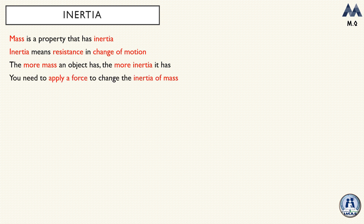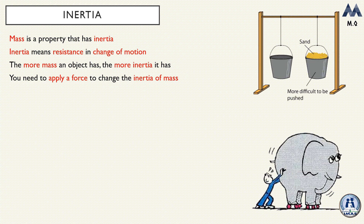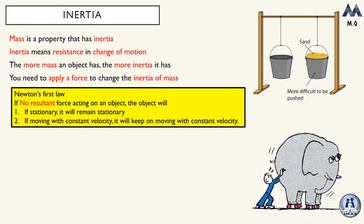In order to change the inertia of an object you need to apply a force. To demonstrate, look at the figures to the right. On the top figure you have two buckets: an empty bucket and another one filled with sand. By intuition you could tell that the bucket filled with sand has more inertia because it has more mass, therefore it's harder to move. Inertia is aligned with Newton's first law.